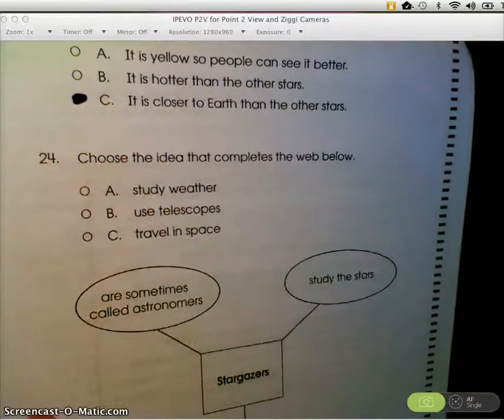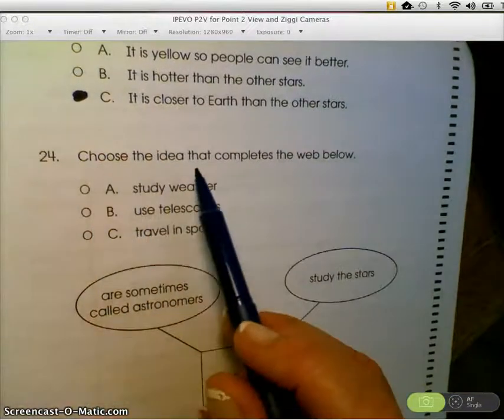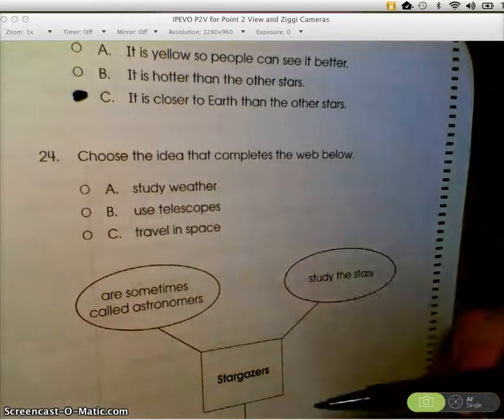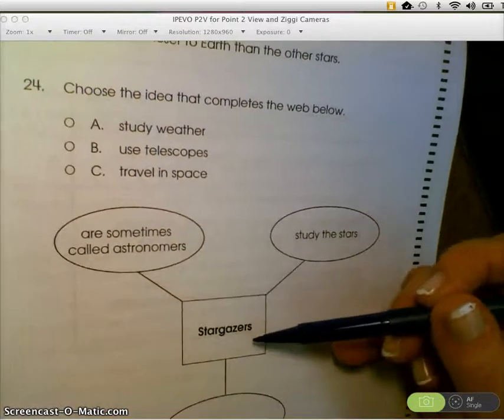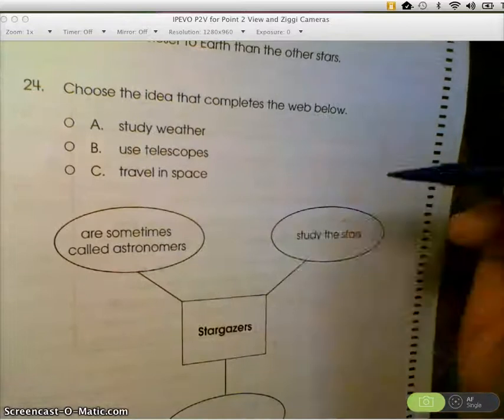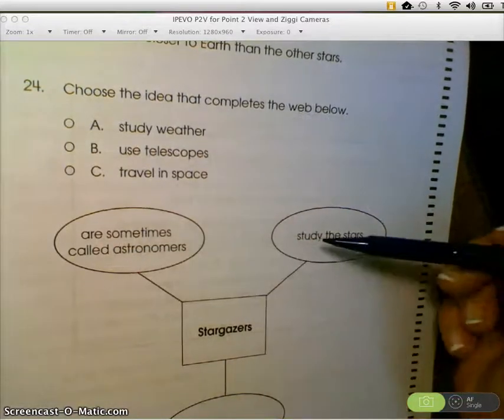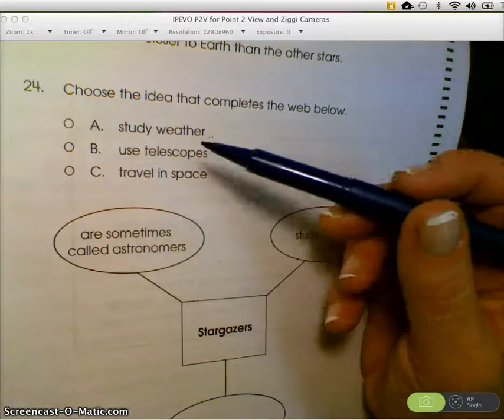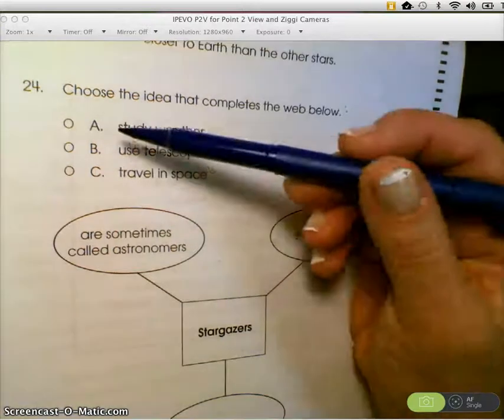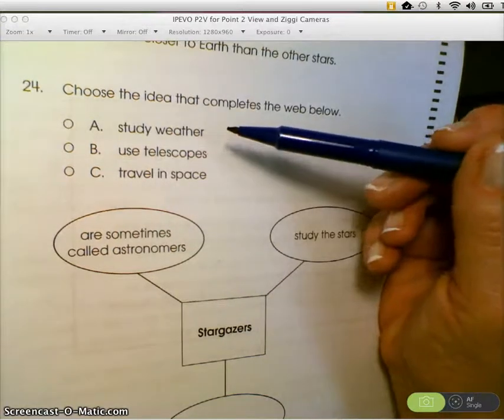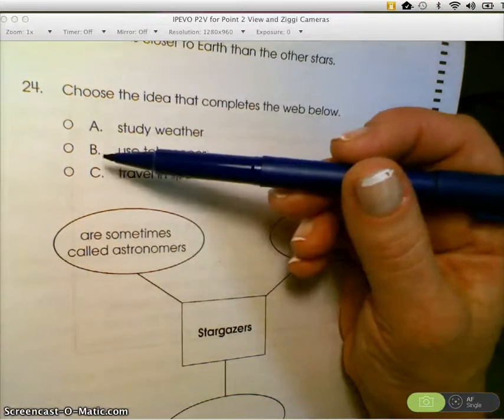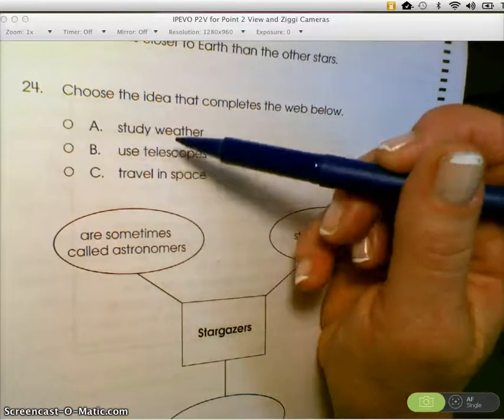Go to question 24. Choose the idea that completes the web. And if we look at the title of the web, it's a web about stargazers. And they give us two facts about stargazers. One, they are sometimes called astronomers. Two, they study the stars. What's the third fact that fits in here? A. Do stargazers study the weather? No. B. Do they use telescopes? We know they do, so that's a possibility.